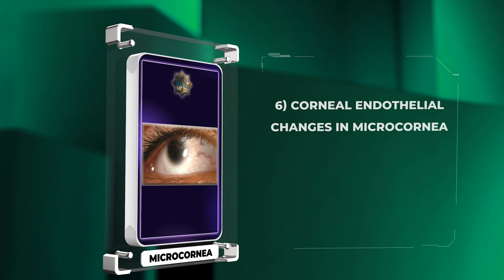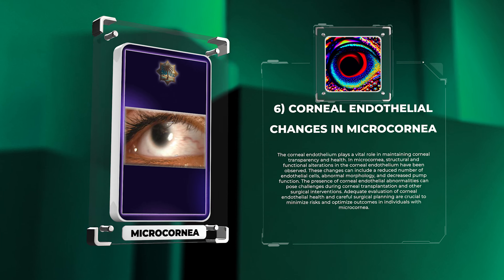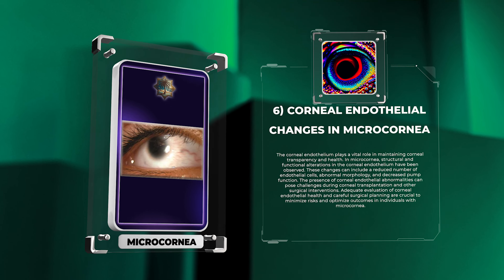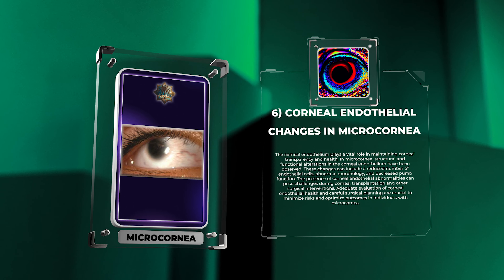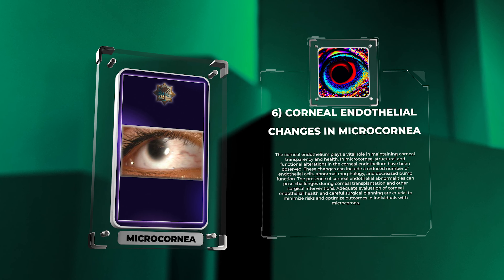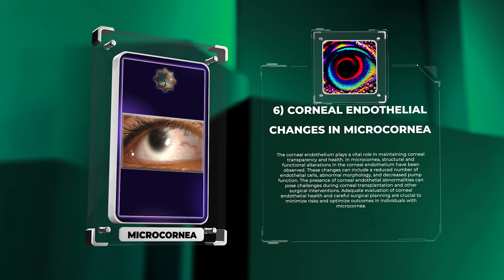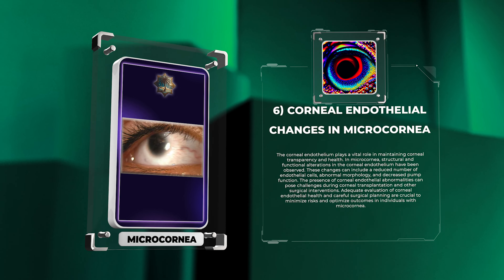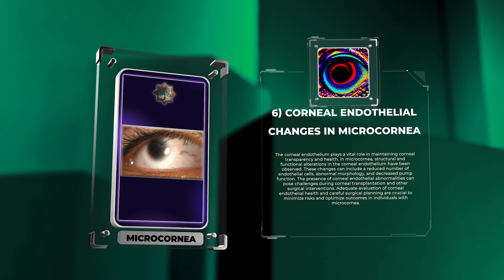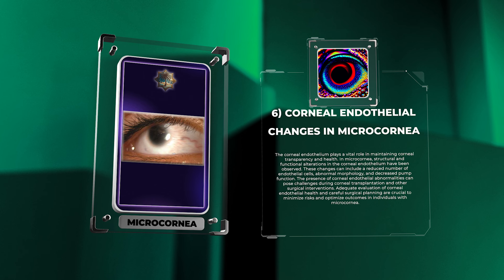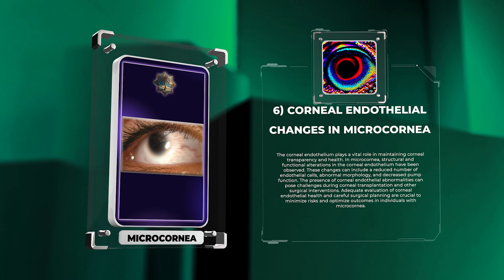The corneal endothelium plays a vital role in maintaining corneal transparency and health. In microcornea, structural and functional alterations in the corneal endothelium have been observed. These changes can include a reduced number of endothelial cells, abnormal morphology, and decreased pump function. The presence of corneal endothelial abnormalities can pose challenges during corneal transplantation and other surgical interventions. Adequate evaluation of corneal endothelial health and careful surgical planning are crucial to minimize risks and optimize outcomes in individuals with microcornea.